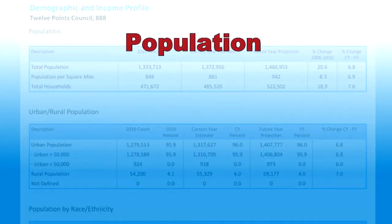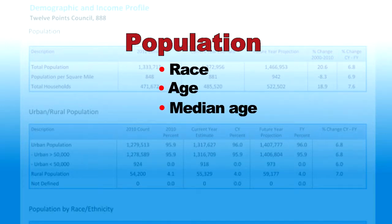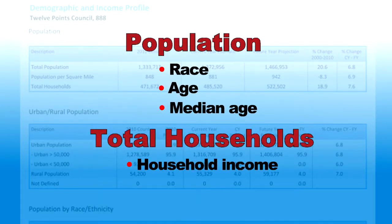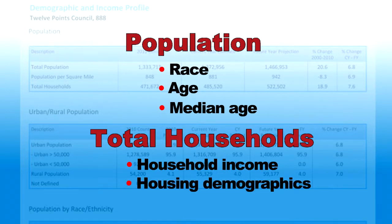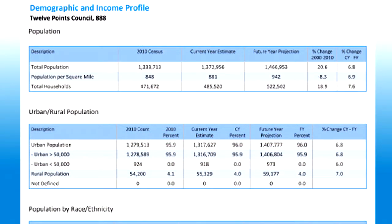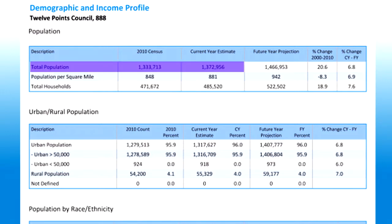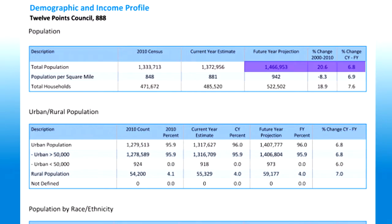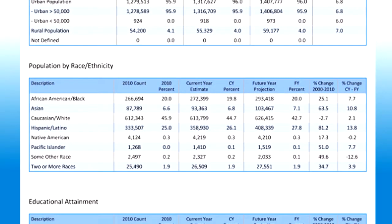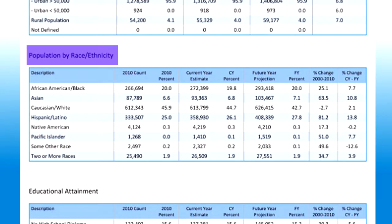Demographics include population broken out by race, age, and median age, and total households broken down by household income and housing demographics. This information gives you a snapshot of your council market quickly and accurately. Not only can you see the council's total population, but also its projected growth over the next five years. The population by race and age allows you to see growth for each group.